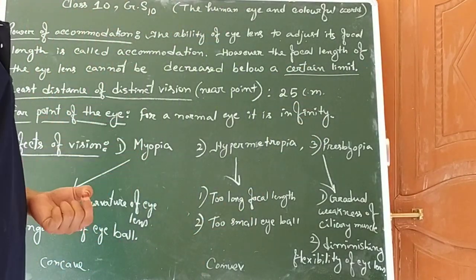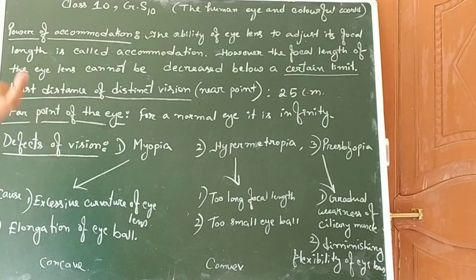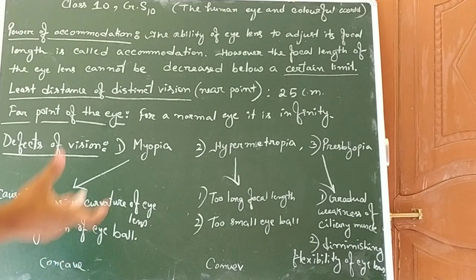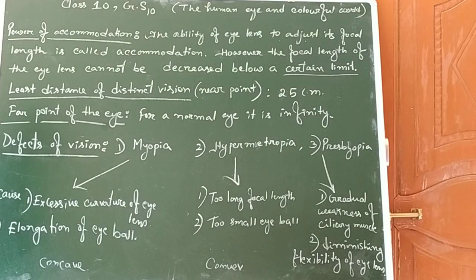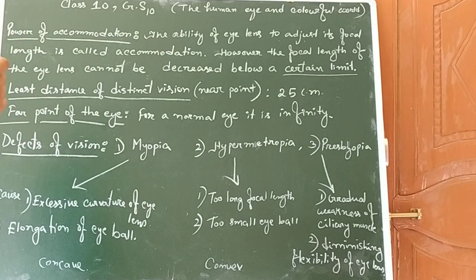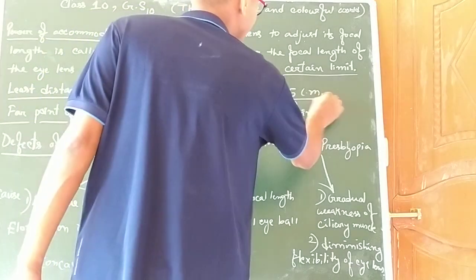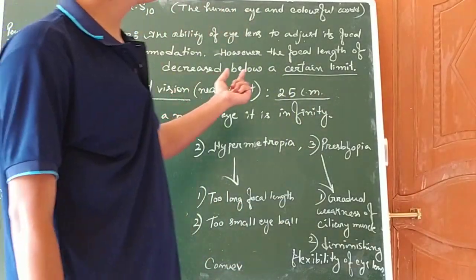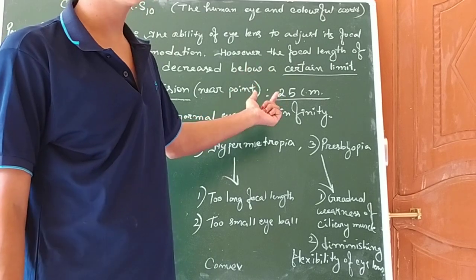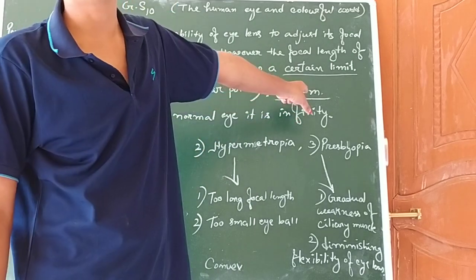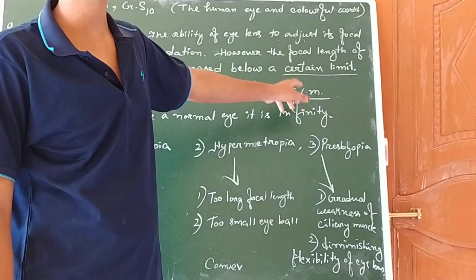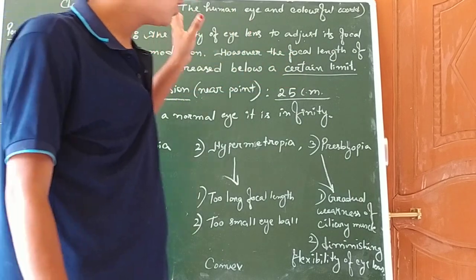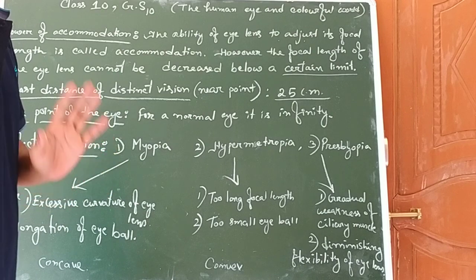After crossing this certain limit, you cannot see the object comfortably or clearly. This minimum distance is called the least distance of distinct vision, or the near point of our eye. It tells us how close an object can be and still be seen clearly. It is 25 centimeters. Our focal length cannot decrease below 25 centimeters. At 25 centimeters and greater, we can see an object comfortably without any stress.